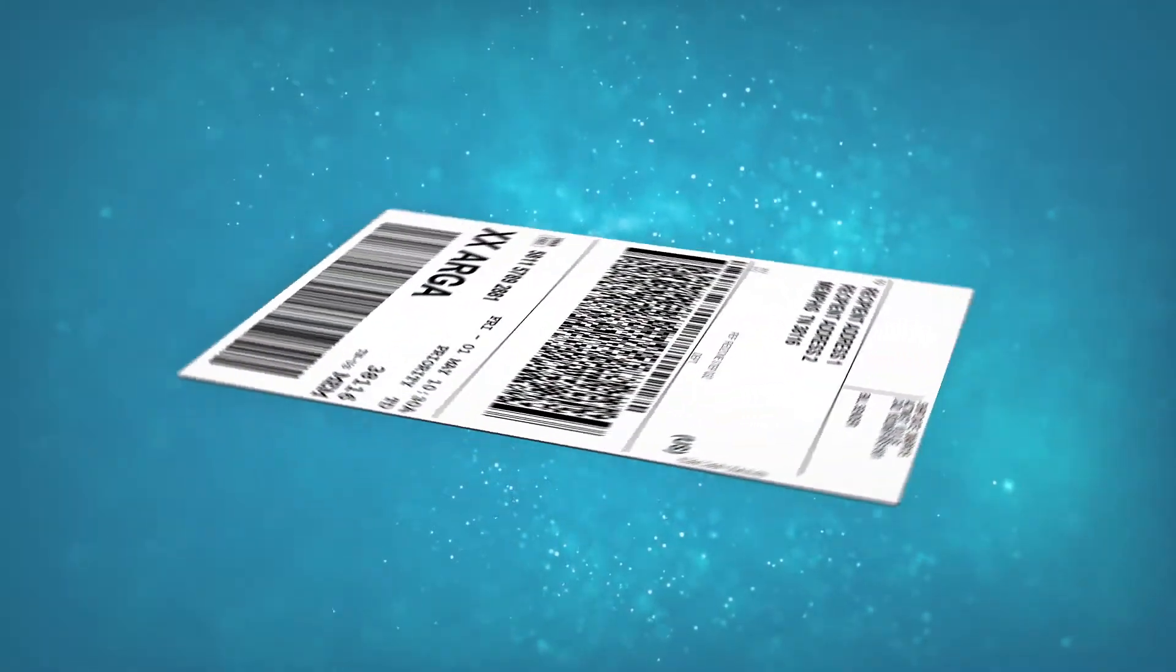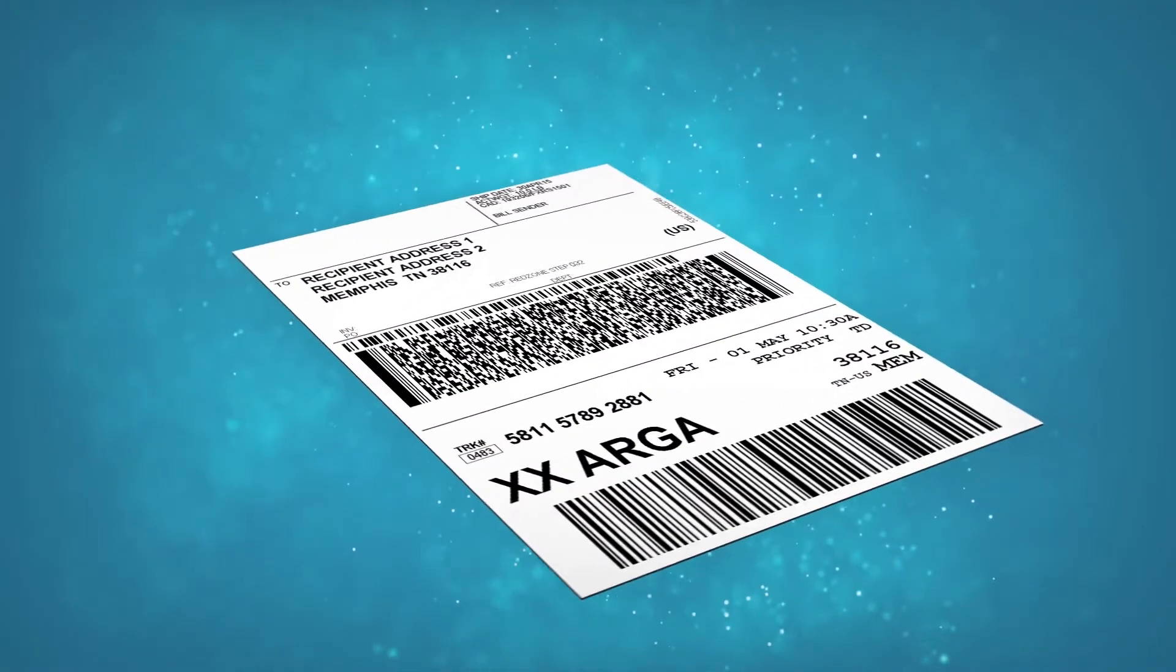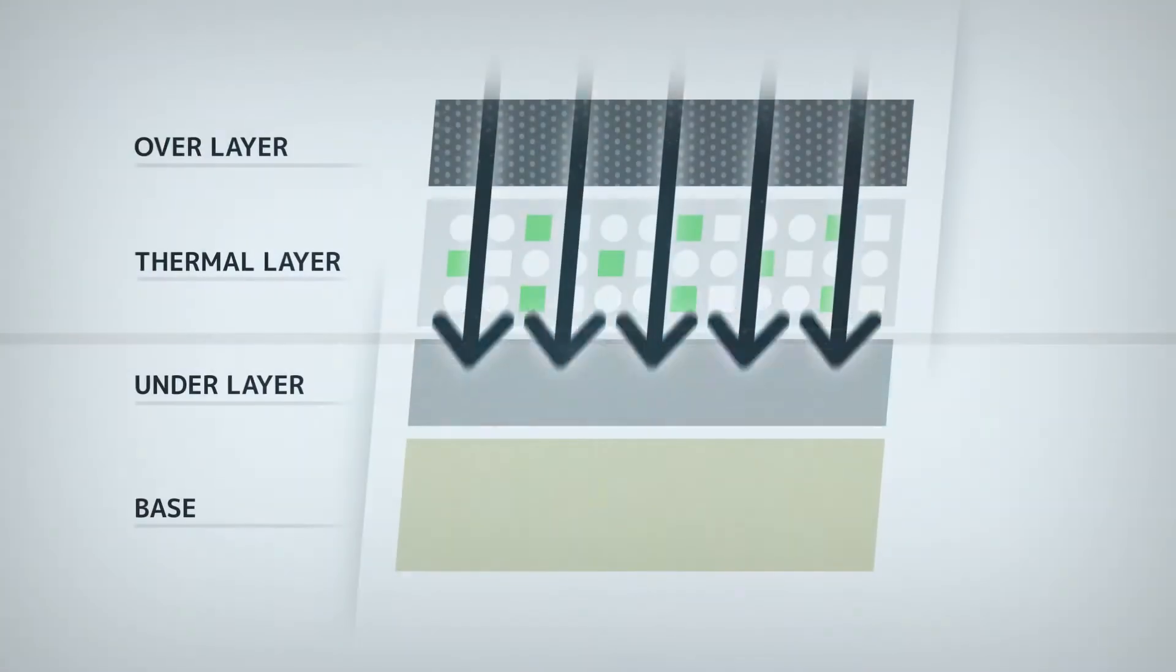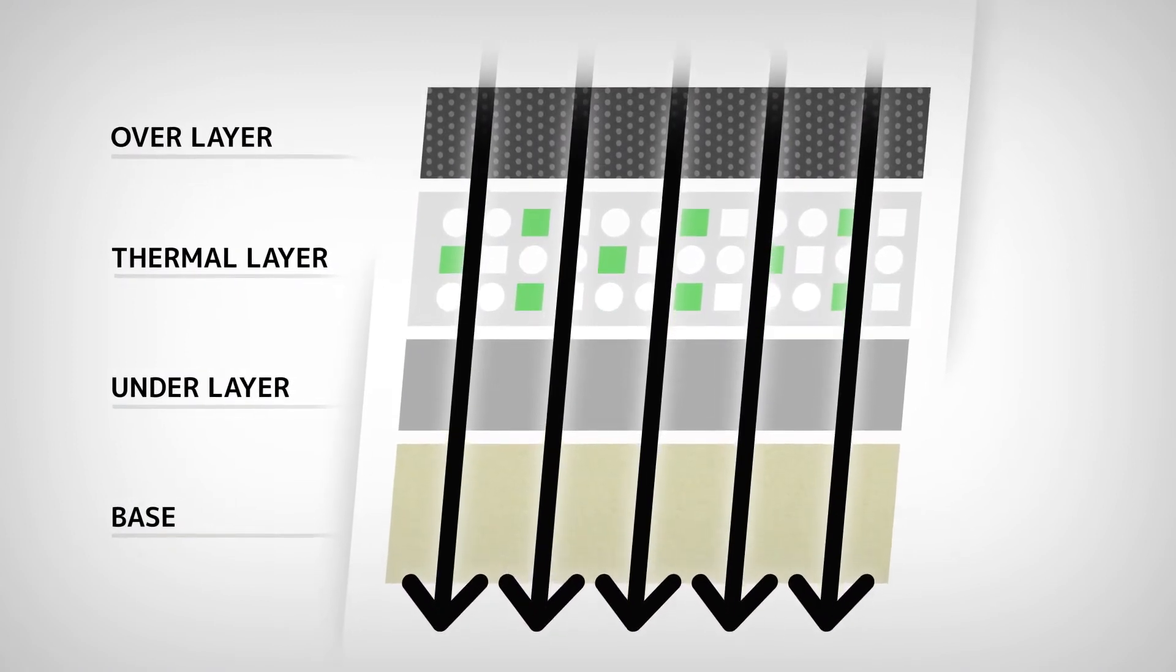To understand the product advantages of this technology, let's look at an average thermal label. As the thermal printhead moves across the label, energy is absorbed in the thermal layer, creating the desired image.